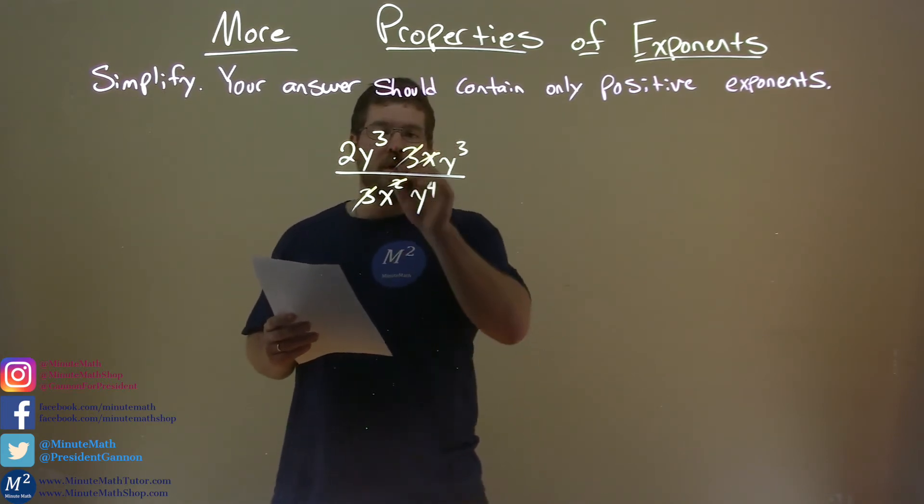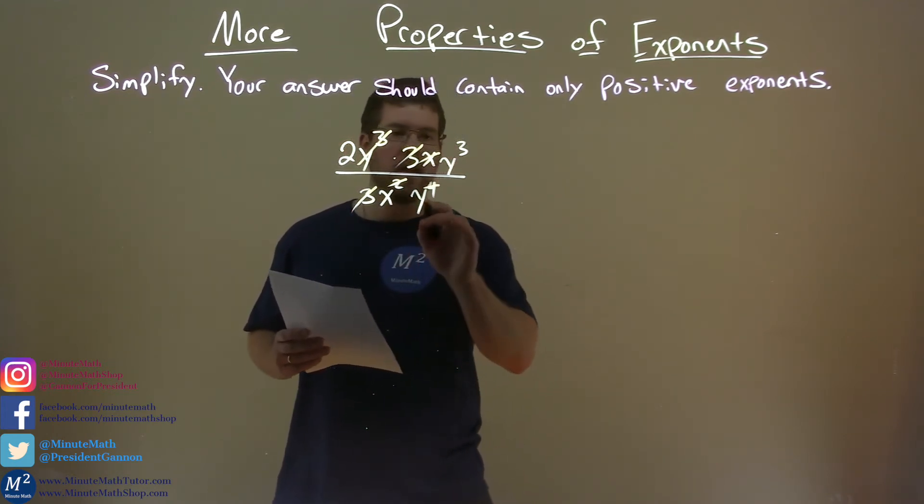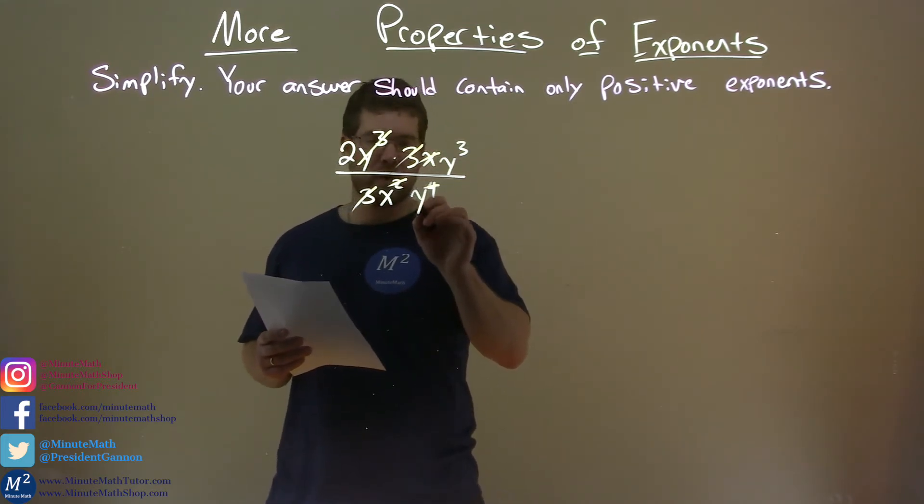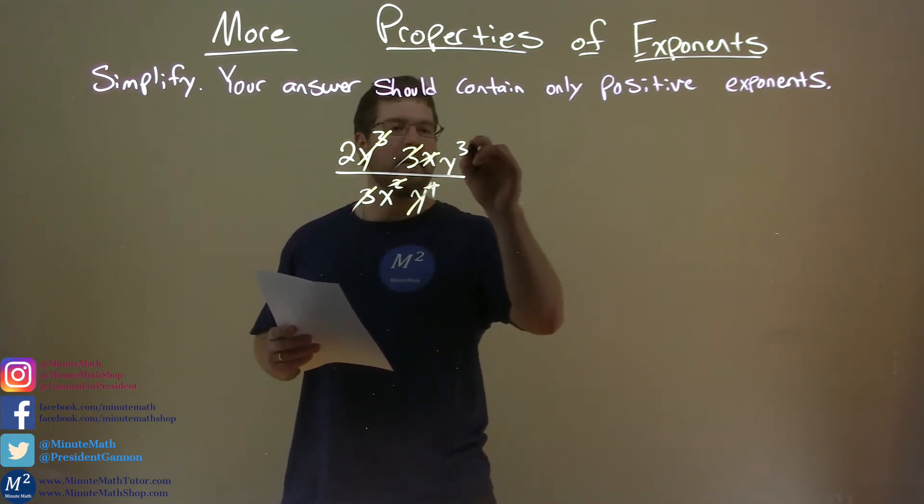Now our y's. We have 3 y's here and 4 y's there. So 3 y's eliminate that 4, leaving us 1 left over. And then y to the third power over 1y here, y to the first power, gets rid of that full y, make that a 2.